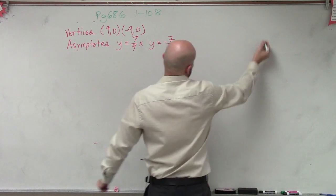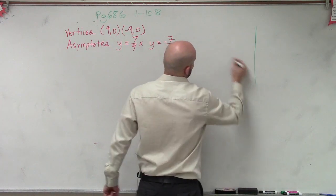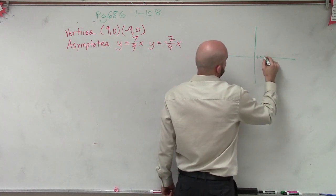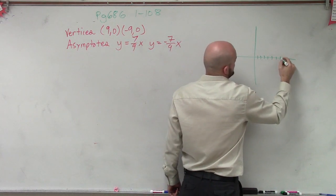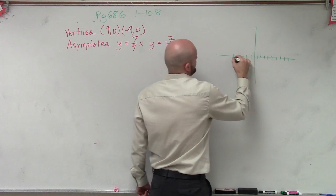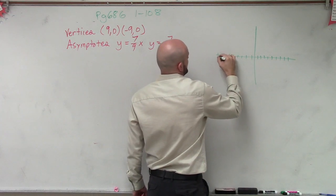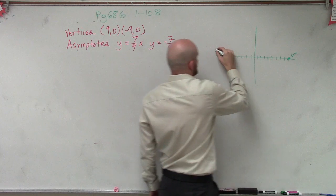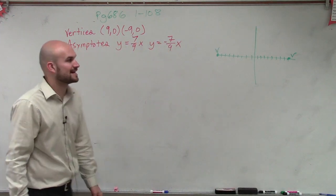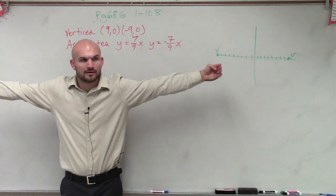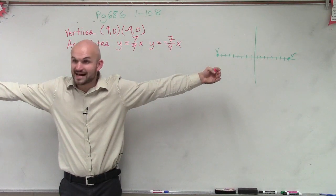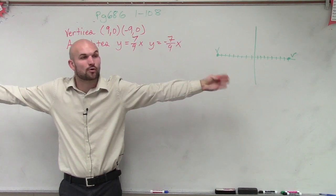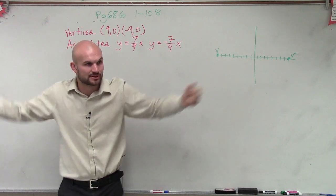So I'm going to plot the information I'm given: (9, 0) and (-9, 0). So that's one vertex and that's the other vertex. Since I have vertices that are horizontally away from each other, I know I'm going to have a horizontal axis of symmetry.